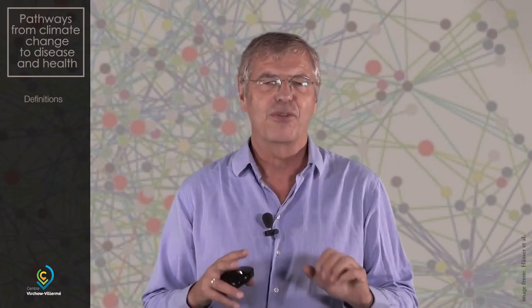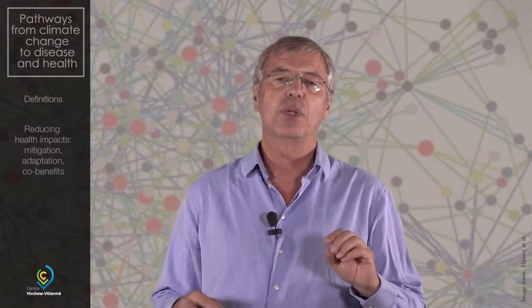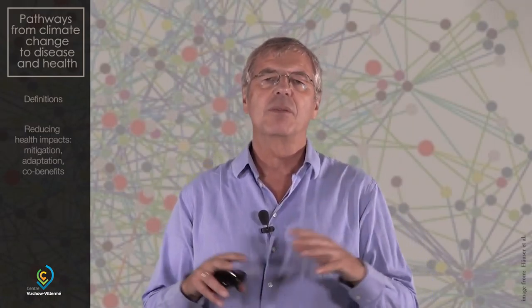Think of going by bike — it's good for both the climate and for your cardiovascular fitness. Now we get into health. I simplified things with this cartoon. On the horizontal axis is the timeline between now and the end of the century, and on the vertical axis is the disease burden. We see a baseline, and we assume that without climate change the baseline would be the same until the end of the century. Then there is a rising line — that's the potential health impact added on to the baseline disease burden.